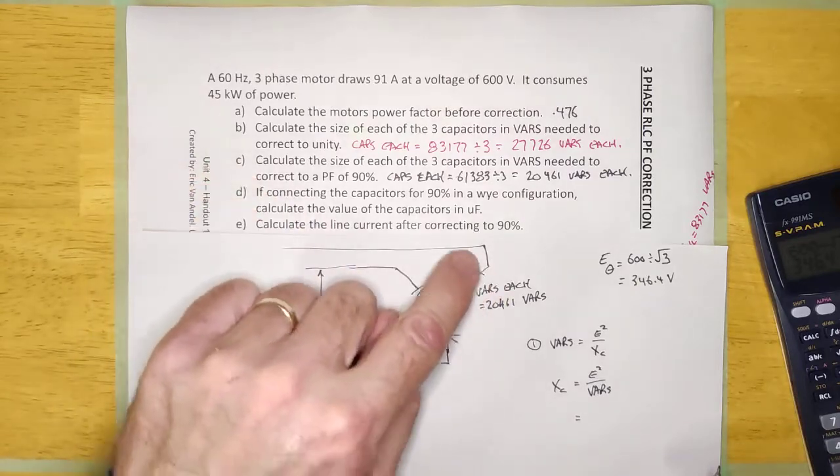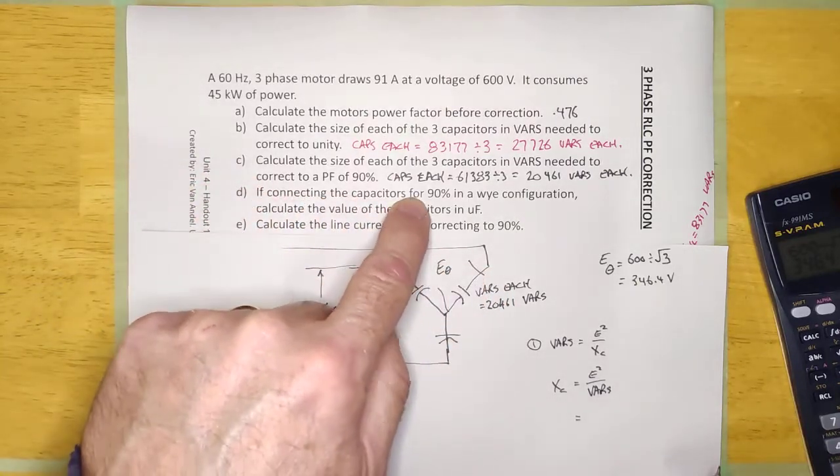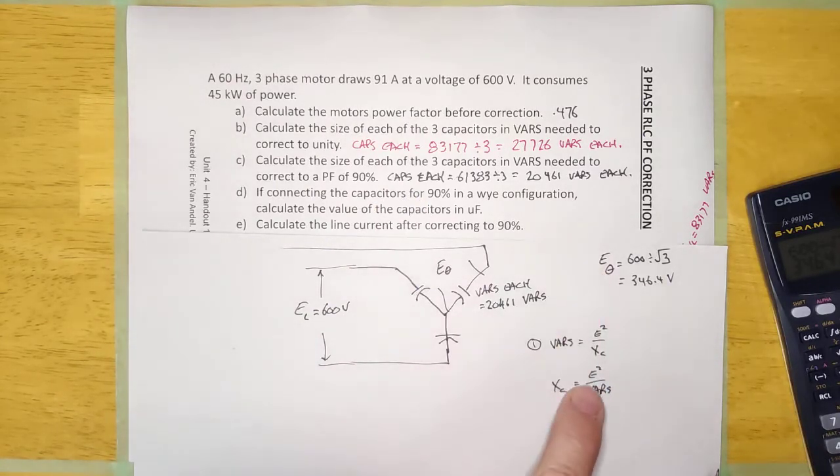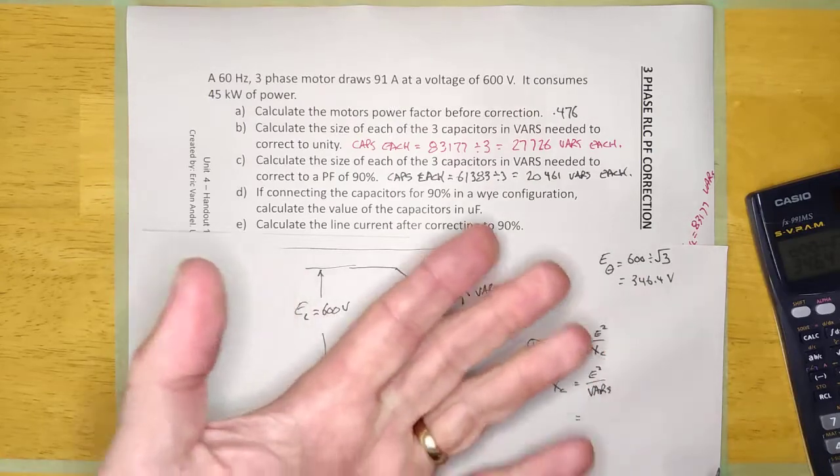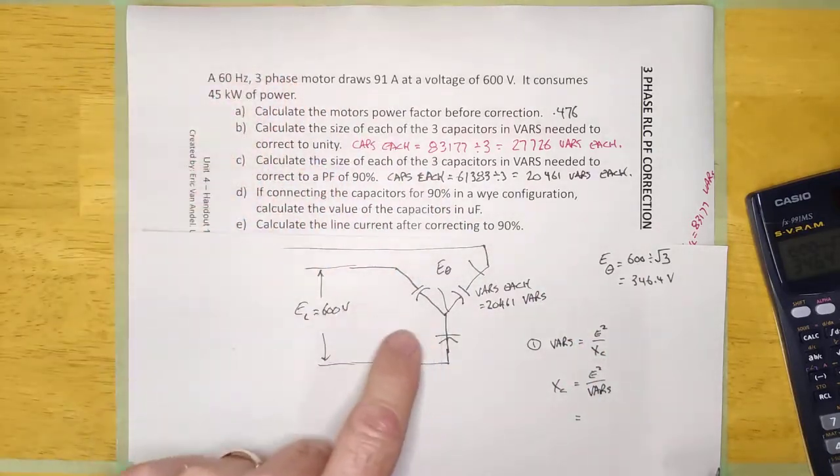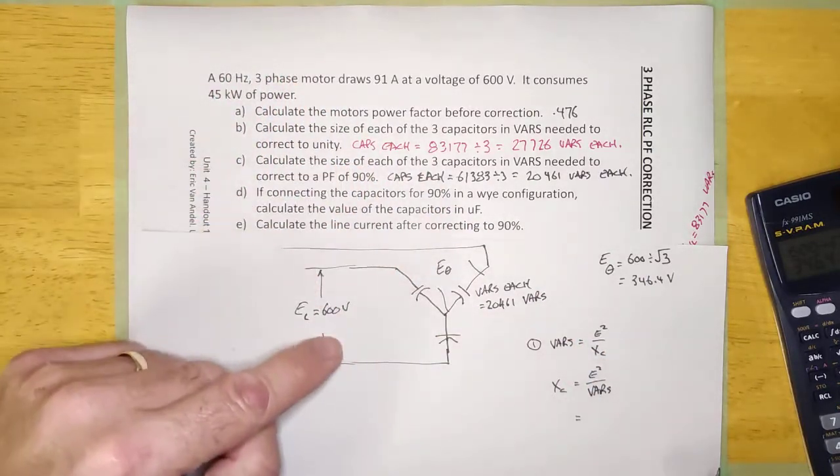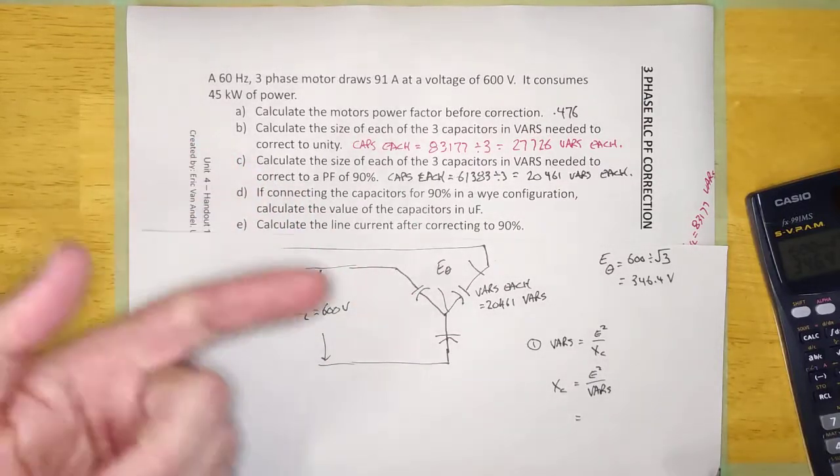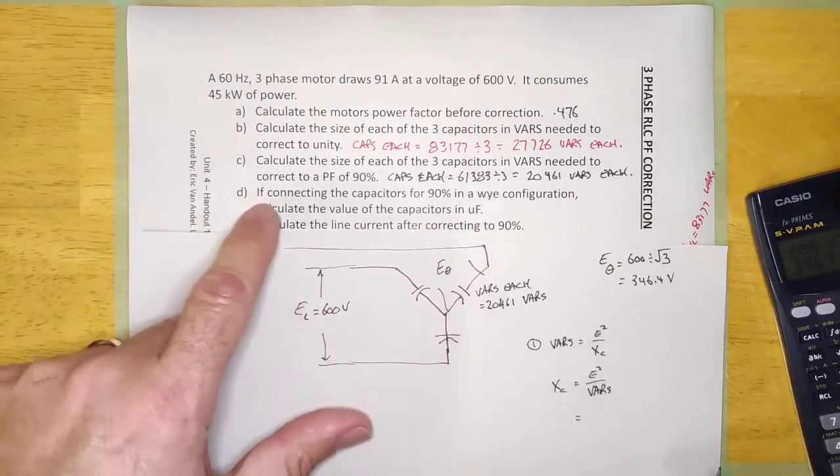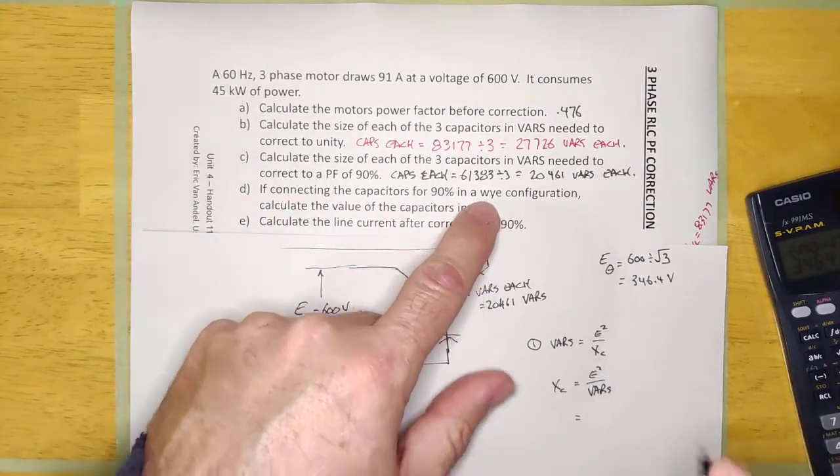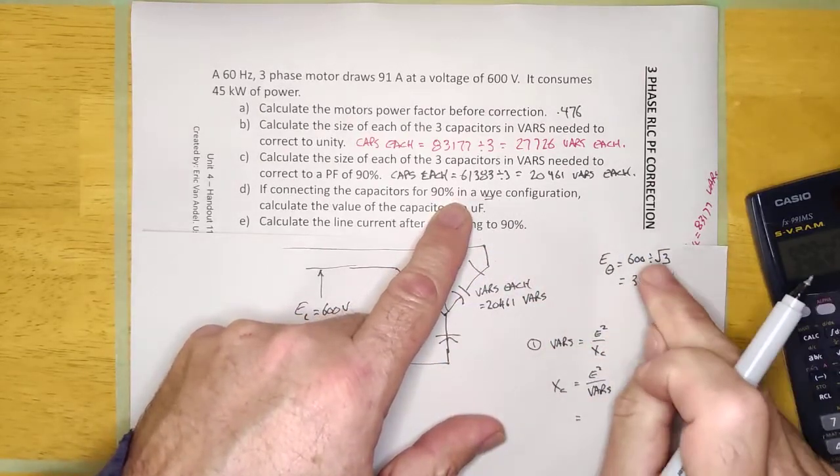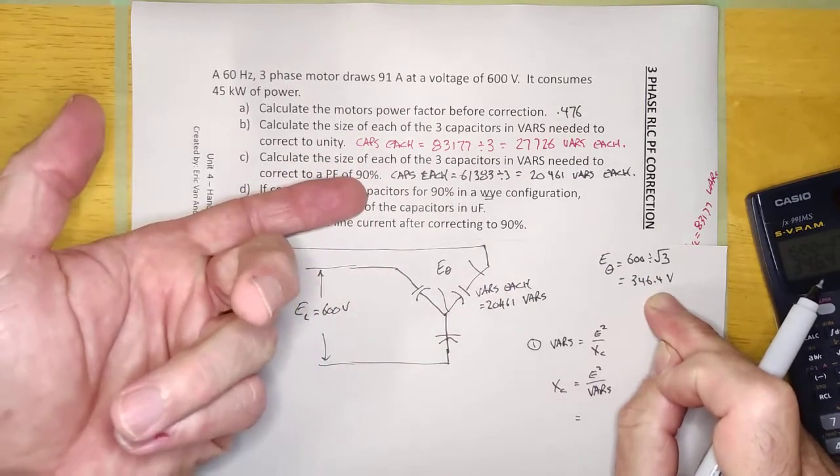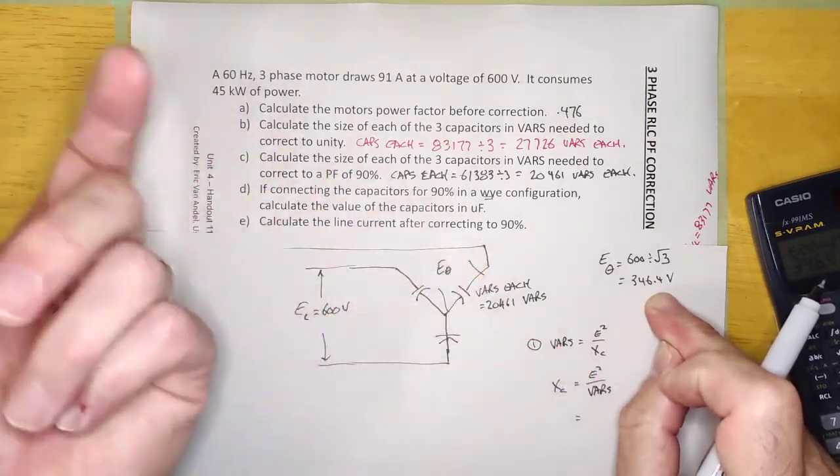Now, if this thing happened to be delta, and it said here, if connecting the capacitors in delta, I would still need to use the phase voltage in this formula. But the phase voltage would be equal to the line voltage. So, it would be less of a big deal because E line is equal to E phase. So, I go, 600 squared over 2461, all right? But it's really important to notice how it's connected. And if it's Y, I have to take the line voltage and divide by root 3 before I apply this formula. If it's delta, I still have to use the phase voltage, but it will be equal to the line voltage.